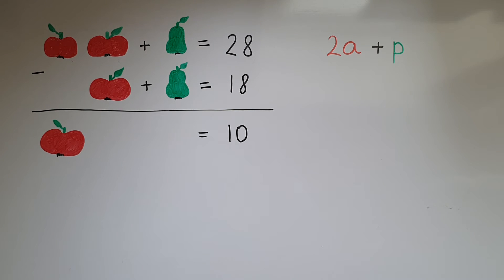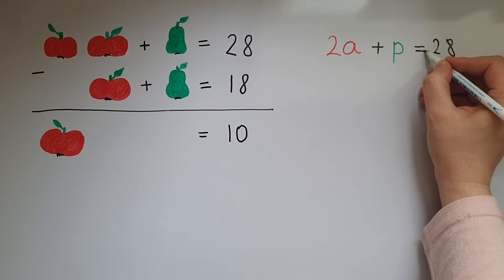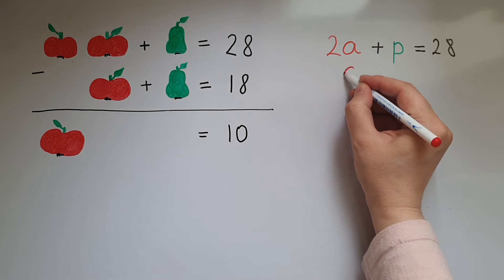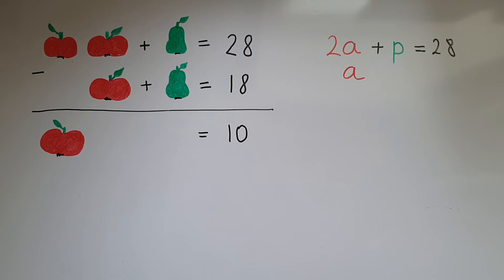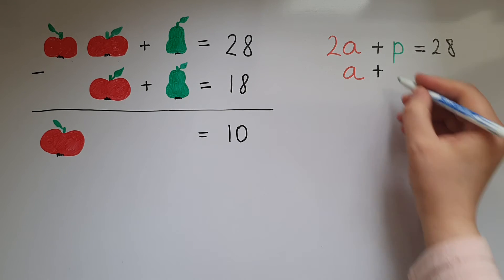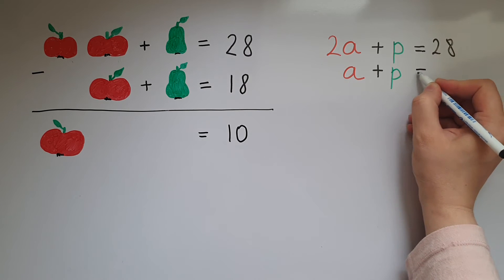And that equals 28. Now one apple, which we can write as just a, plus one pear equals 18.